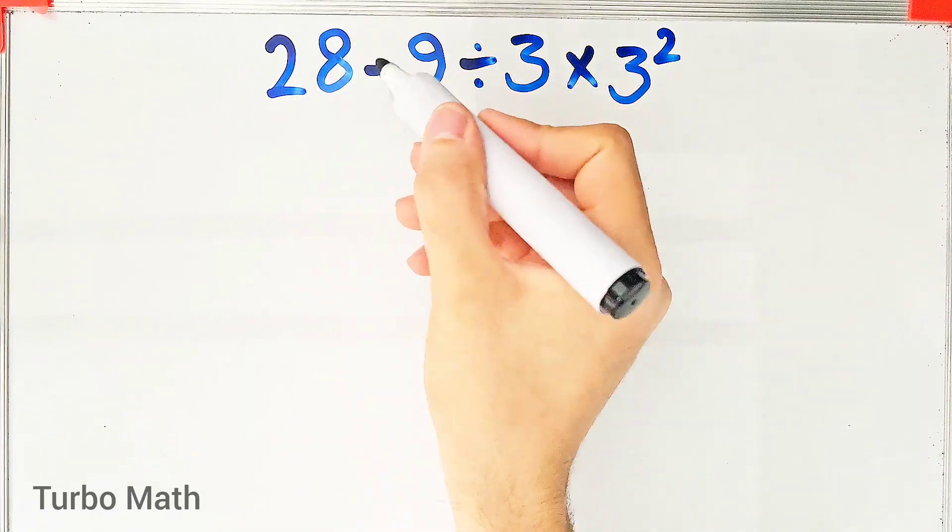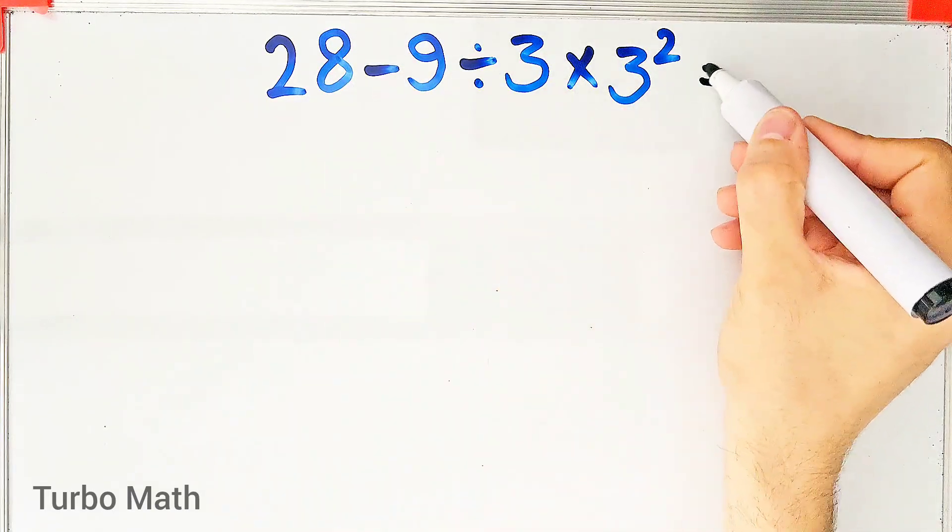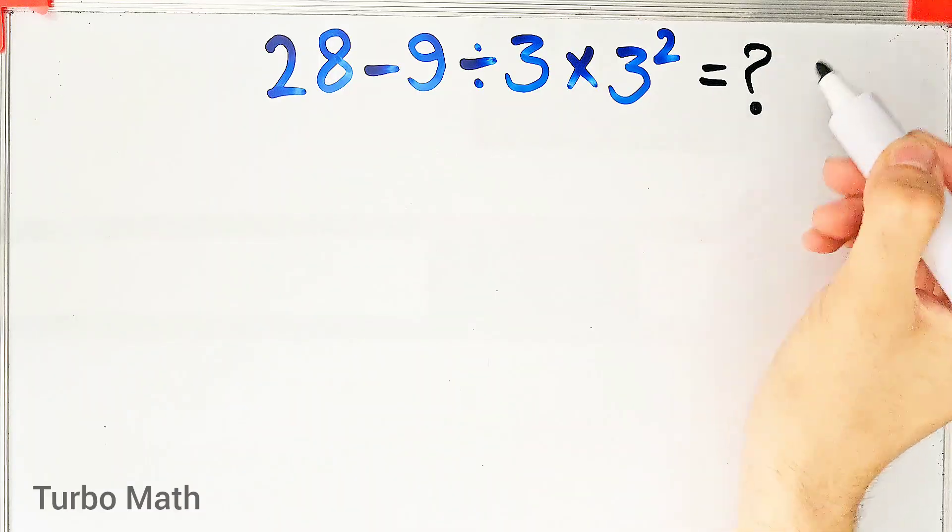28 minus 9 divided by 3 then times 3 to the power of 2. What is the answer of this question? Can you solve it?